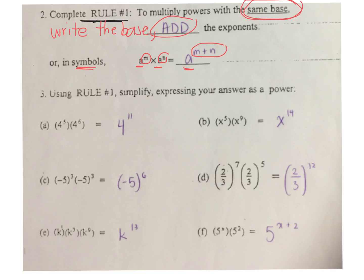Very important: if there is a negative inside a bracket, the base is negative. For question E, you'll notice the letter K — if there's no exponent, you have to assume there's a 1, because the exponent tells you how many times you're writing the base. There's only 1 K. So 9 plus 3 plus 1 equals 13. This should have been K to the power of 13, not K to the power of 12.